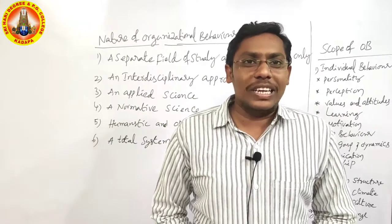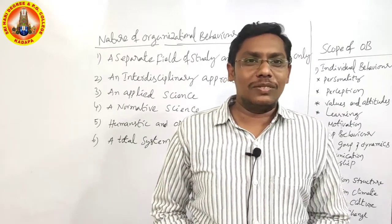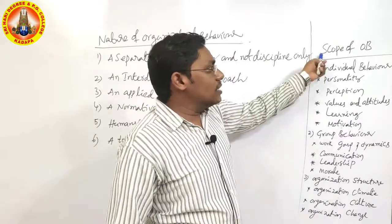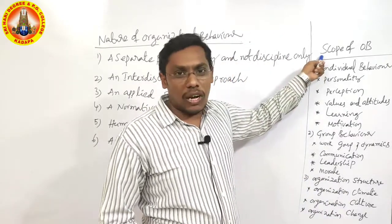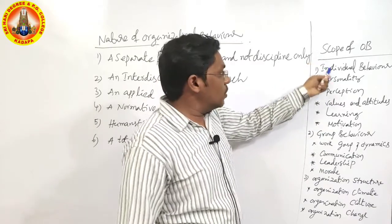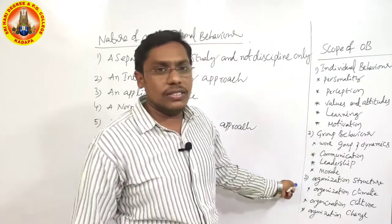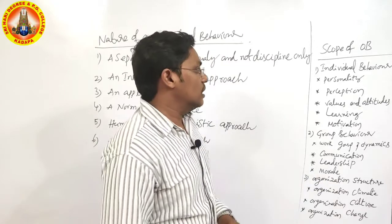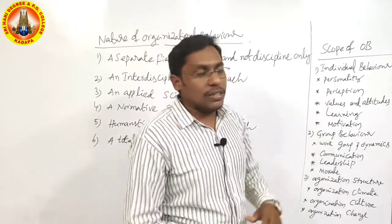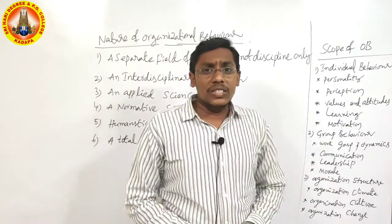Let us discuss the nature and scope of organizational behavior. The scope of organizational behavior includes three main areas: individual behavior, group behavior, and organizational structure.